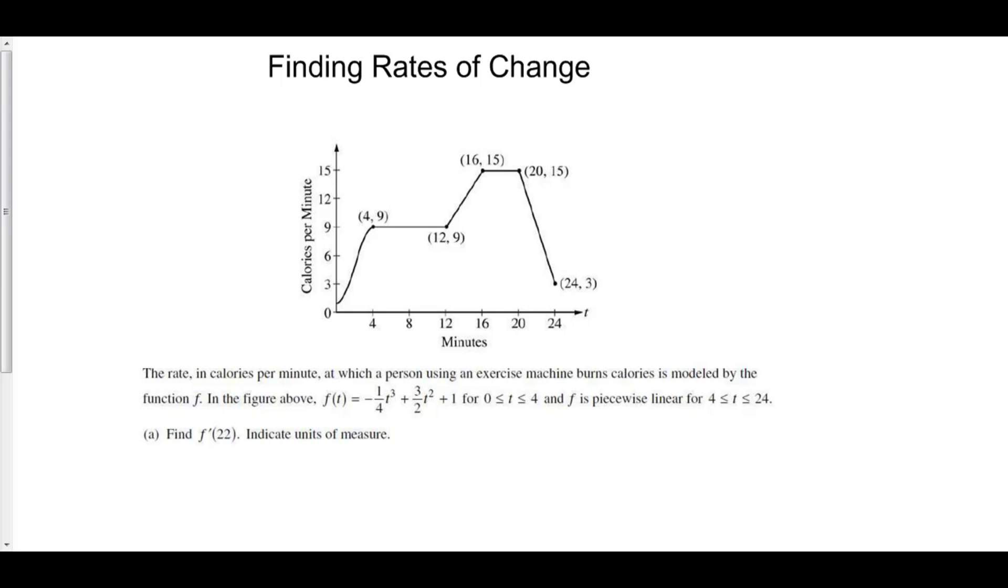The rate in calories per minute at which a person using an exercise machine burns calories is modeled by the function f. In the figure above, f(t) = -1/4 t³ + 3/2 t² + 1 from 0 to 4, and f is piecewise linear from 4 to 24.